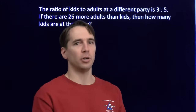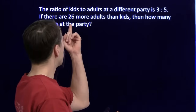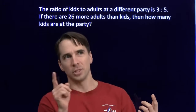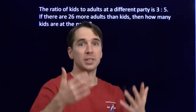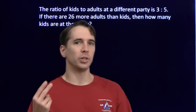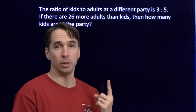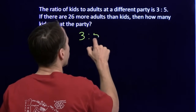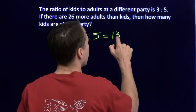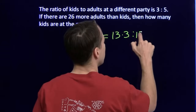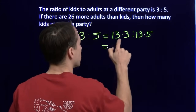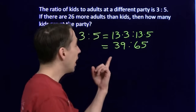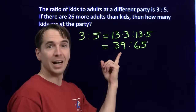Each group has 2 more adults than kids. So with 2 groups, we'd have 6 kids and 10 adults — a difference of 4. With 3 groups, the difference would be 6, and so on. Each group contributes 2 more adults than kids, and we need a total difference of 26 more adults. That means we need 13 groups. Let's check: multiplying 3 to 5 by 13 gives us 39 to 65. Sure enough, 65 is 26 more than 39. So there are 39 kids at the party.